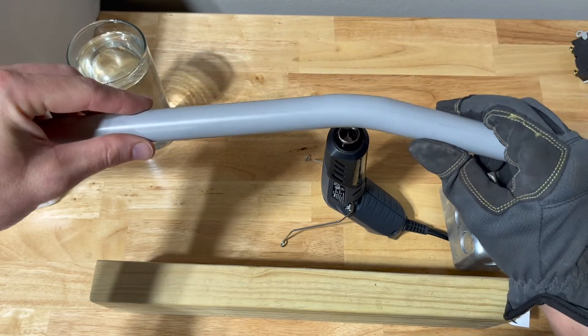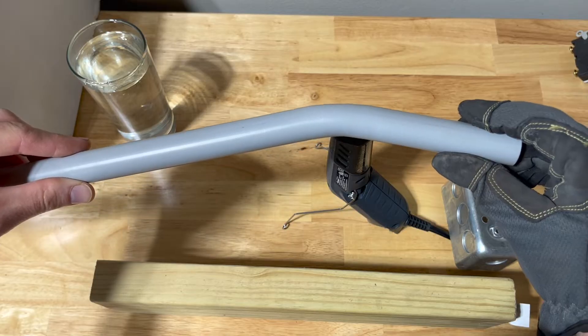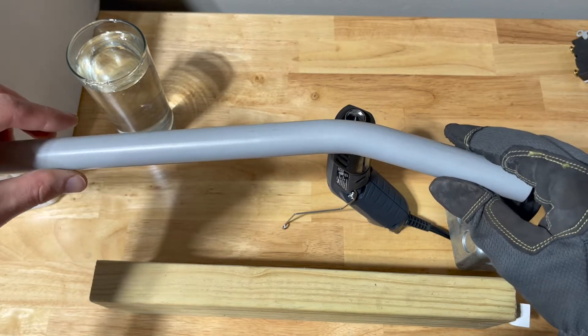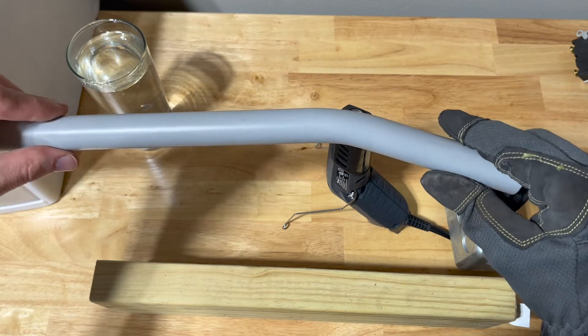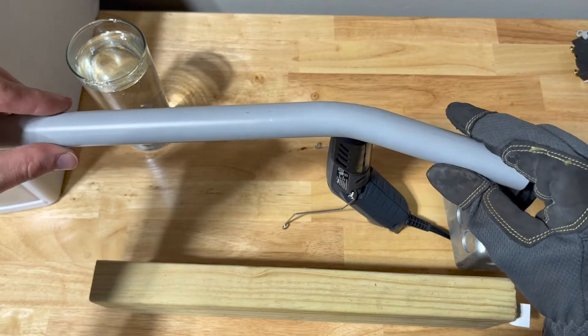There's a slight bend in it, just like that. Just hold it there for a second because it'll kind of want to force its way back to being straight if you don't hold it there. And once you dip it in water, it's going to lock it in place.